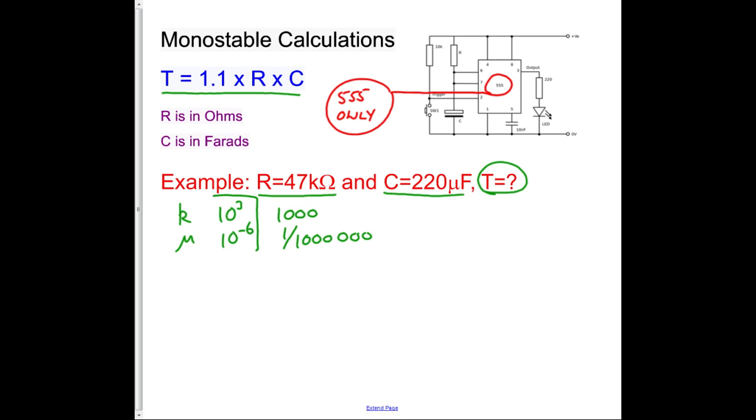But I'm going to concentrate on using these forms of math because it's more useful. So we start off by writing our equation down with the values in: 1.1 times by 47 times 10 to the 3 multiplied by 220 times 10 to the minus 6.